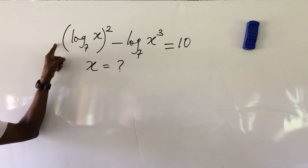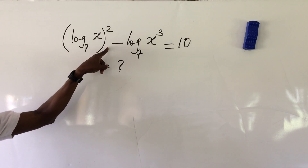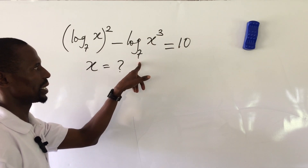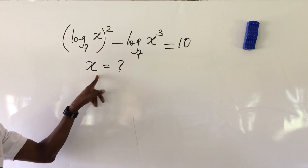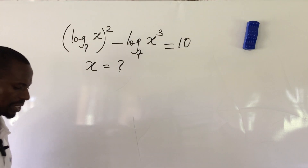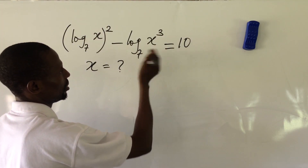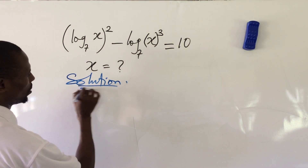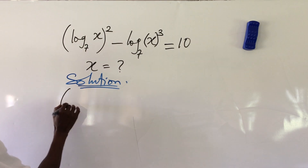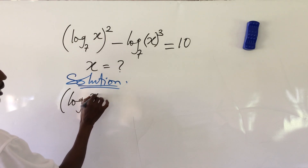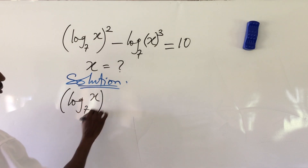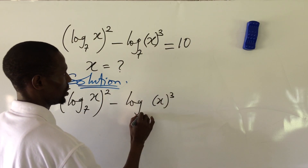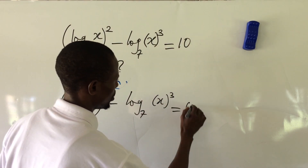The question is: bracket log_x(7) close bracket, all to the power of 2, minus log_(x³)(7), equal to 10. What will be the value of x? Let's take the solution. The question again is: (log_x(7))² minus log_(x³)(7) equal to 10.